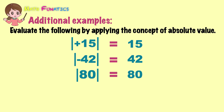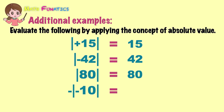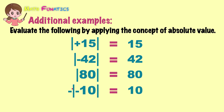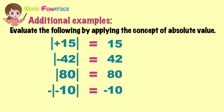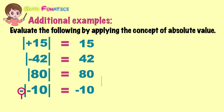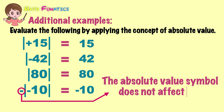Now, how do we evaluate this? There is a negative sign right before the absolute value of negative 10. First, get the absolute value of negative 10, which is equal to 10. Then, affix the negative sign which is found before the absolute value sign to the answer. Remember that the absolute value symbol does not affect the negative sign in front.